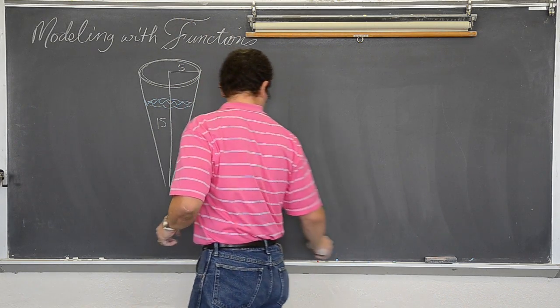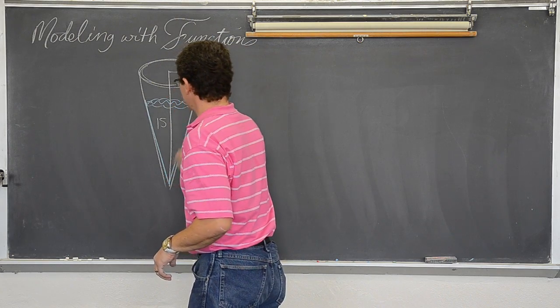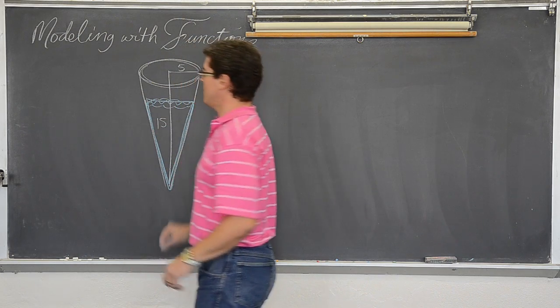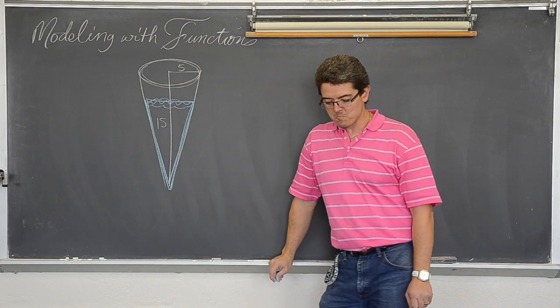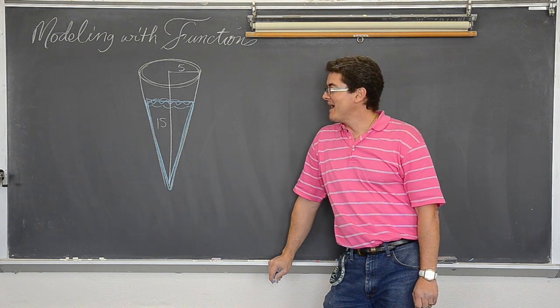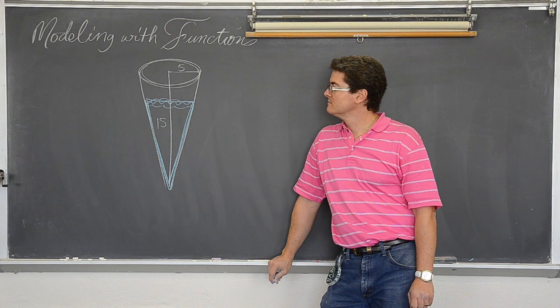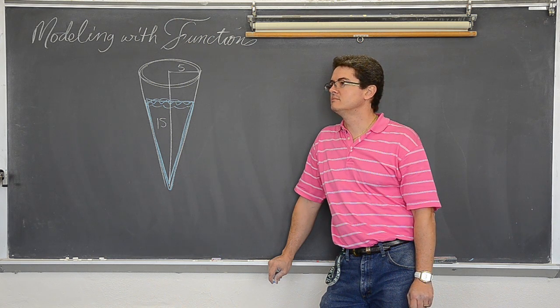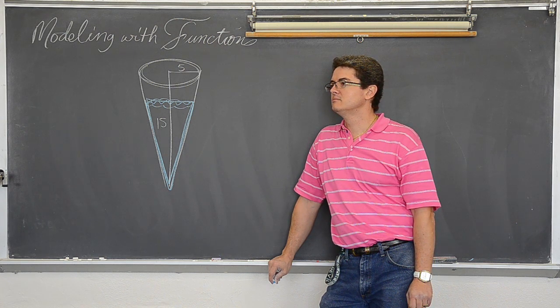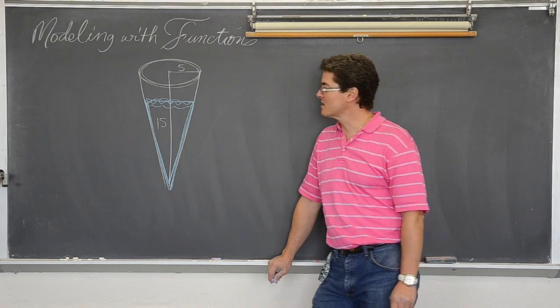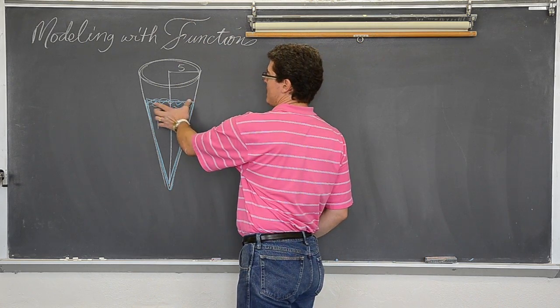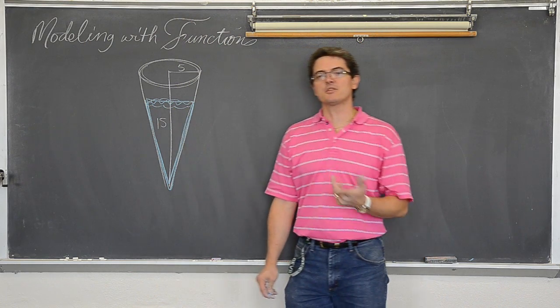So we are just going to talk about... I want to write the volume of the water. So let me use blue to match the water. So write a formula for the volume of water in this cone that is only in terms of the height or the depth. Excuse me. What am I doing? Let's write in terms of the radius. So I can measure how wide the water is on top and then come up with the volume.